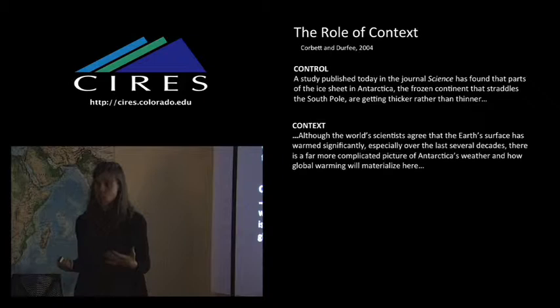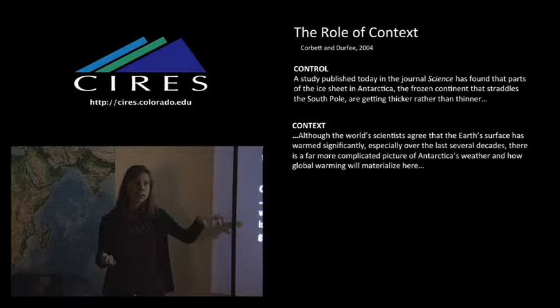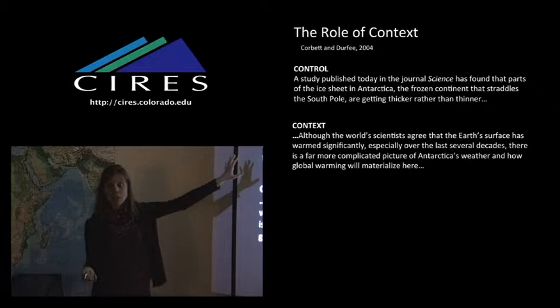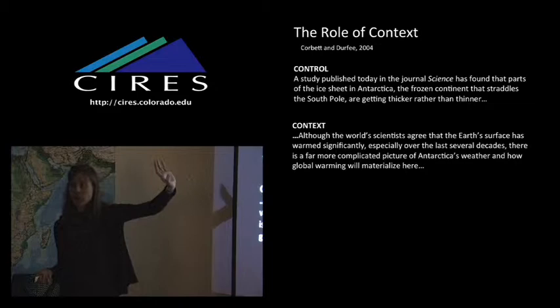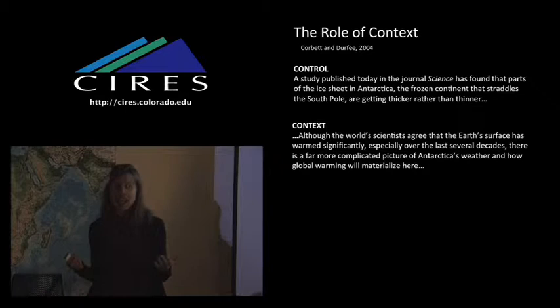And when the students ranked these as more or less uncertain, the students that read the paper with context thought that there was a lot more certainty, a lot more scientific agreement about what was going on, while those who were given no additional context felt like it was pretty uncertain and that scientists had no clue what global warming was all about. So context can really help solve the problem of uncertainty. The problem is journalists usually leave it out. And so without having enough context, they can accidentally make the story more uncertain than it really is.